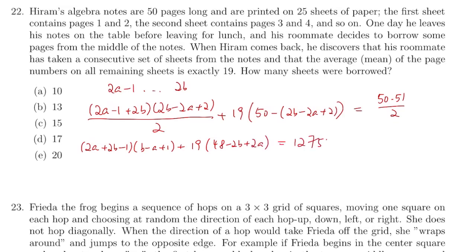So we're going to simplify. We have 1275. And we can further simplify to get B minus A plus 1 times 2A plus 2B minus 1. And then we further minus 38. And we'll get 1275 minus 19 times 50.